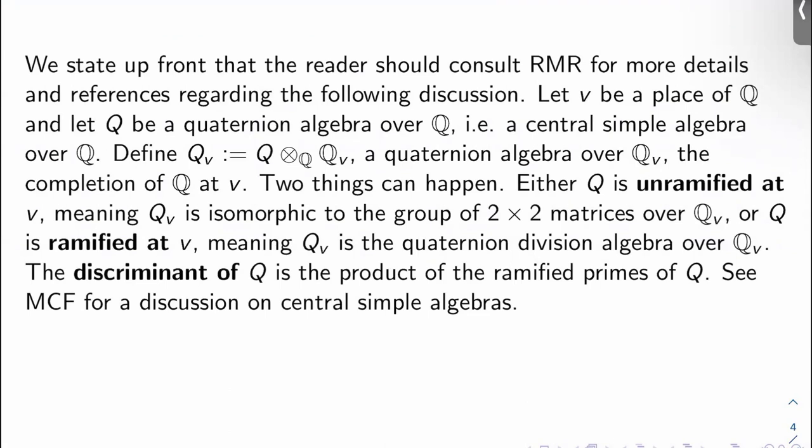First of all, you should consult Ribet's paper. I think it's called 'From the Taniyama-Shimura conjecture to Fermat's last theorem,' and then you should read his actual Inventiones 100 paper for details and references regarding the following discussion at large in this entire video and the next video. That's the original paper. There's also chapter 7 of Cornell-Silverman-Stevens.